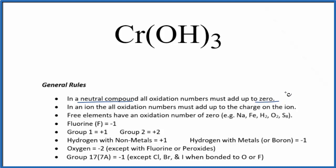There's two ways to do this. The first way is to look at this hydroxide ion here, OH. In an ion, all the oxidation numbers add up to the charge on the ion. So all of these are going to add up to one minus.